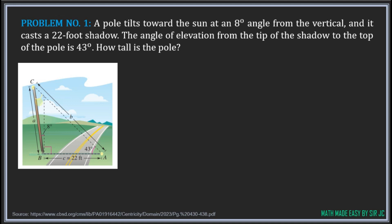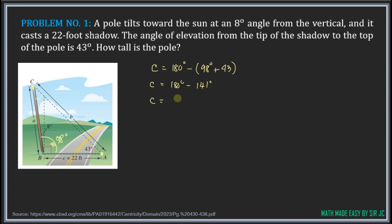We can find angle C because we have a triangle with one known angle. We have a vertical line and a horizontal line forming a right angle of 90 degrees, plus the 8-degree tilt, giving us 90 + 8 = 98 degrees for that full angle. Since the sum of angles in a triangle is 180 degrees, C = 180 − (98 + 43) = 180 − 141 = 39 degrees. So angle C is 39 degrees.